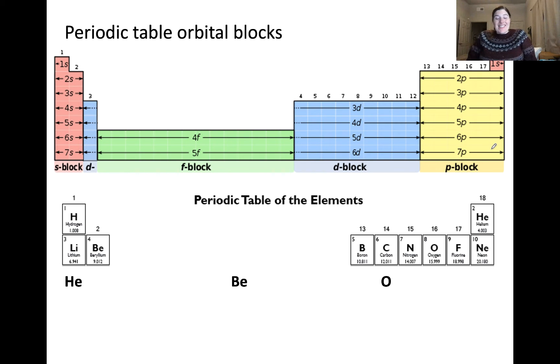Let's put this into practice. What you're looking at on the top of this slide is a color-coded diagram showing the s, p, d, and f blocks of the periodic table. And right below that, I'm showing a zoomed-in version of the periodic table, just the first two rows to start.